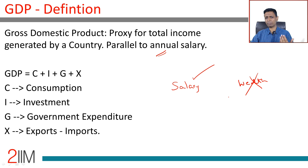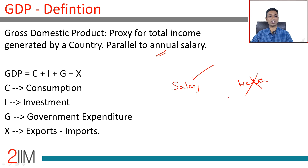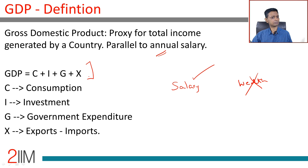GDP can be measured in many ways — the income approach, the expense approach, or the value-added approach. The most common approach for measuring GDP is the expense approach.